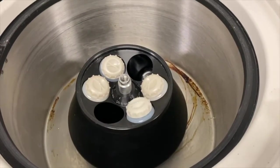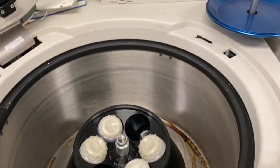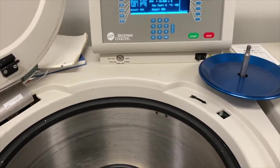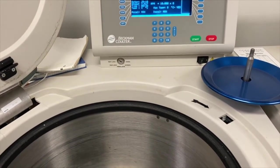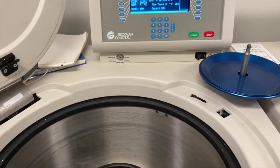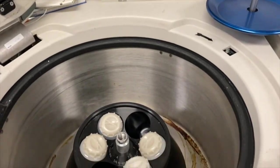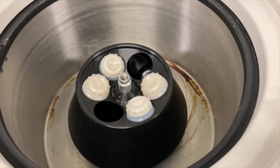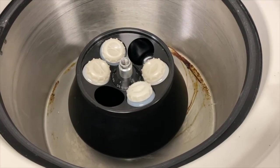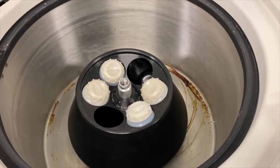When the tubes are balanced, place them in the centrifuge fitted with the appropriate rotor so that the balanced tubes are positioned opposite one another. This is very important for proper balancing. Close the centrifuge and run it at 6000 g for 30 minutes at 4 degrees Celsius. Make sure you have the proper training with this centrifuge before you use it.